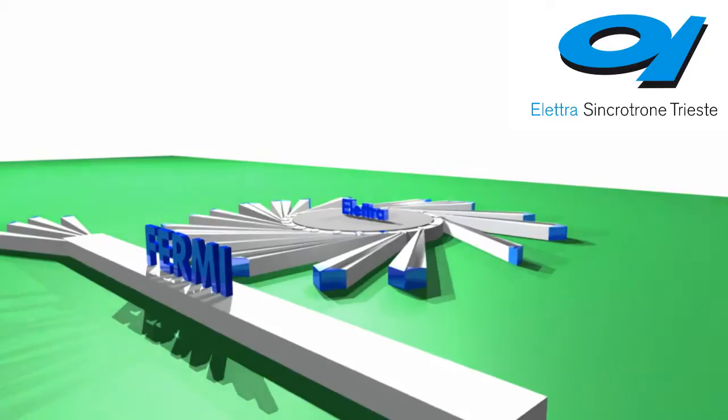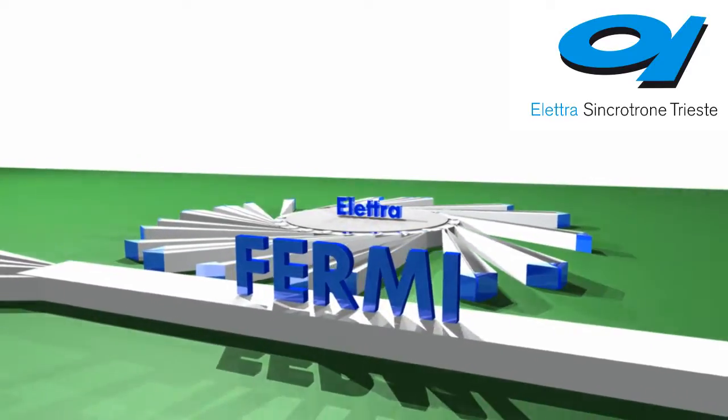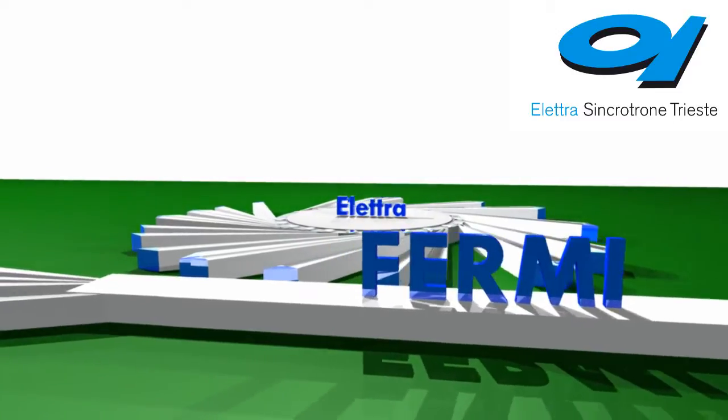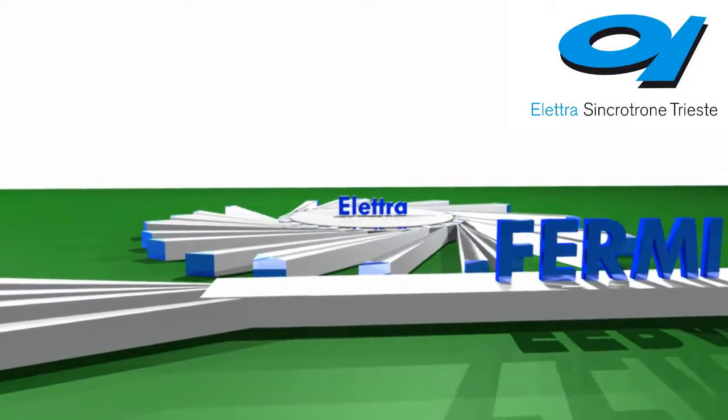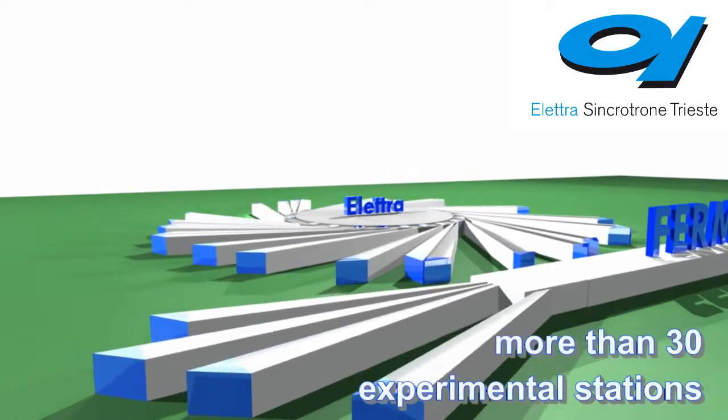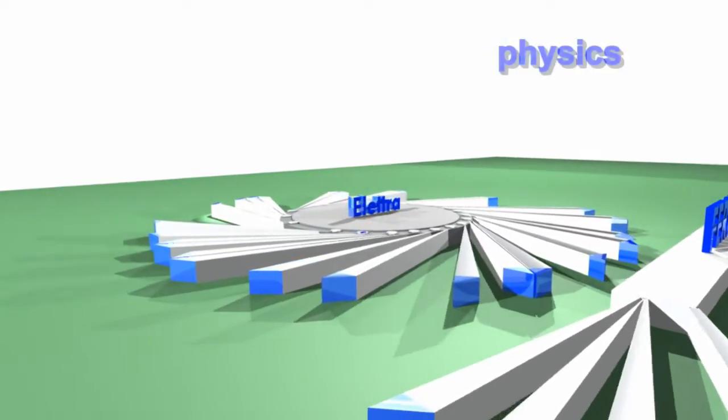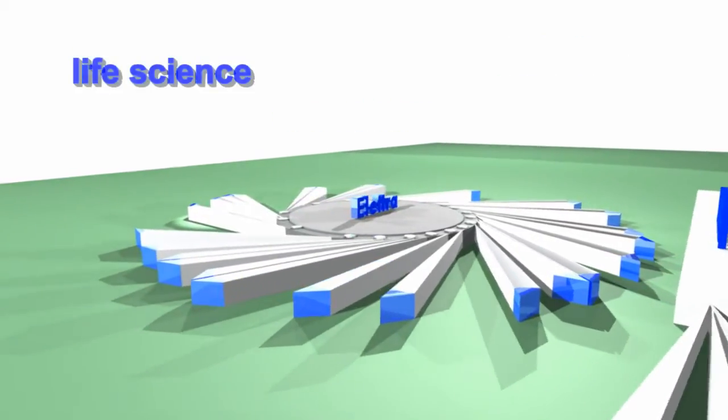Elettra Synchrotrone Trieste operates two advanced light sources available to the international research community: the storage ring Elettra and the free electron laser Fermi. Our facilities host more than 30 experimental stations, which cover nearly all aspects of photon science and techniques applied to a broad range of scientific disciplines.